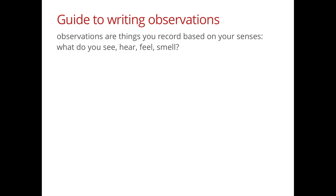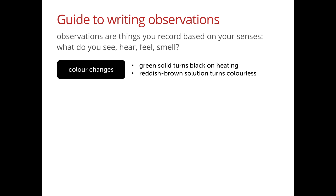The first and most obvious one is colour changes, and this can apply to both solids as well as solutions. Here are two examples: the first one is that a green solid turns black upon heating, and another one is a reddish brown solution turns colourless. Notice that when you describe observations, you want to be very clear, very specific, and you want to show the initial as well as the final colour.